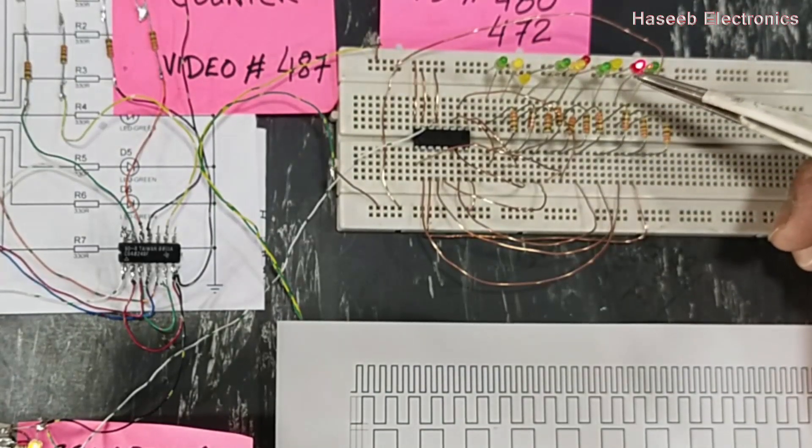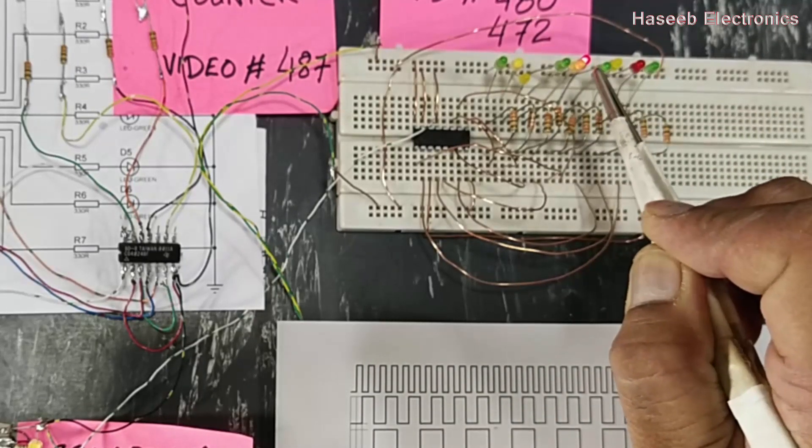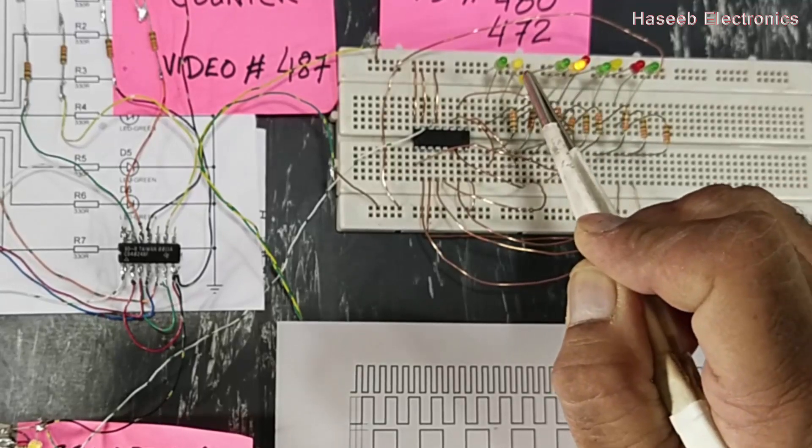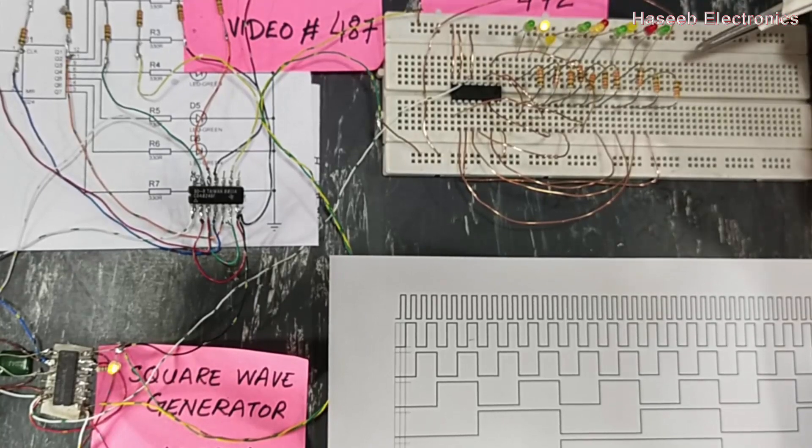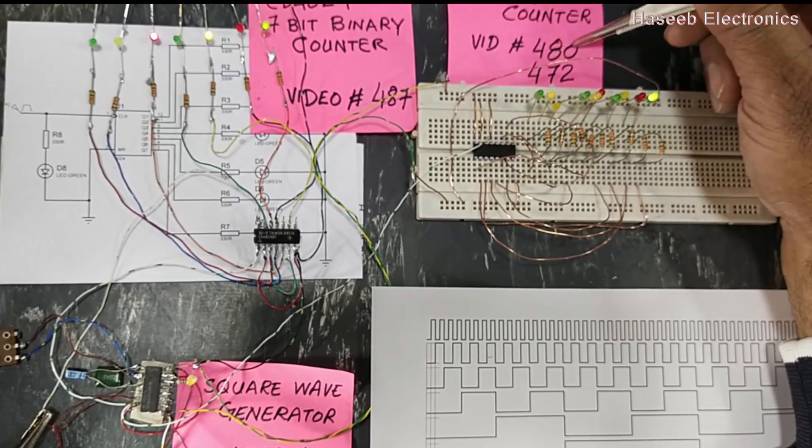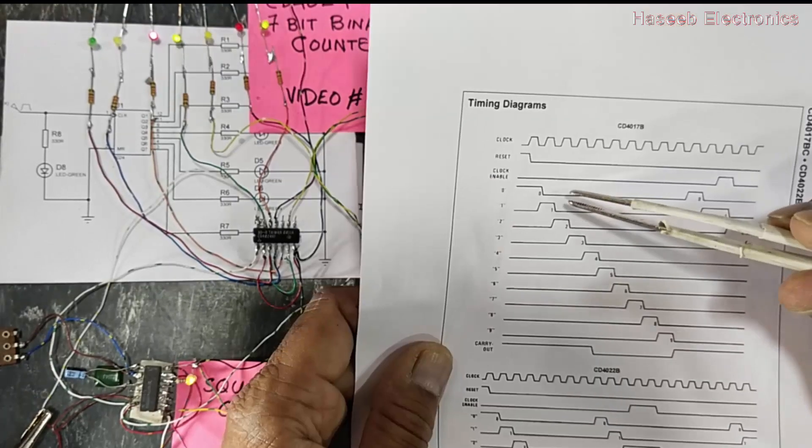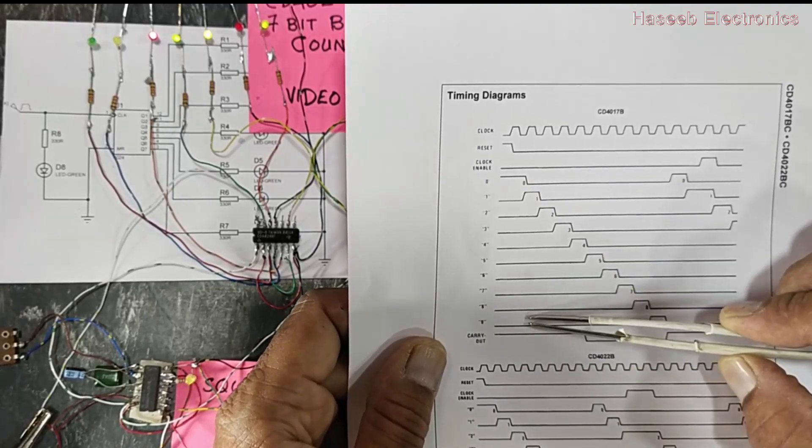At the next pulse, output number two will go high, then three, and so on. At a time one output remains high and it will keep moving to the next higher stage at each pulse. If you're interested to make this project, you can follow video number 480 or 472. It has 10 bits, 10 outputs Q0 to Q9.